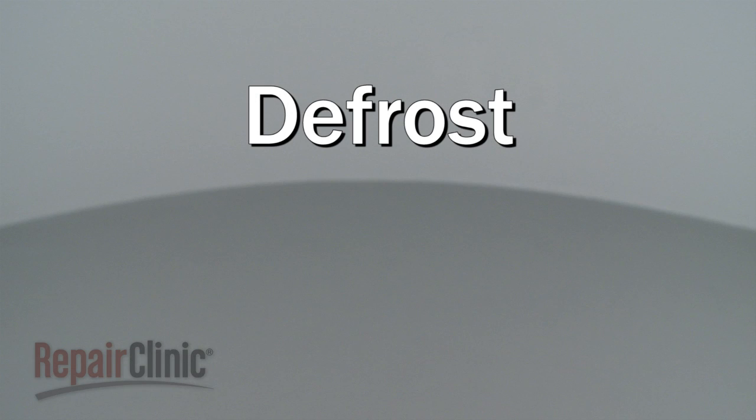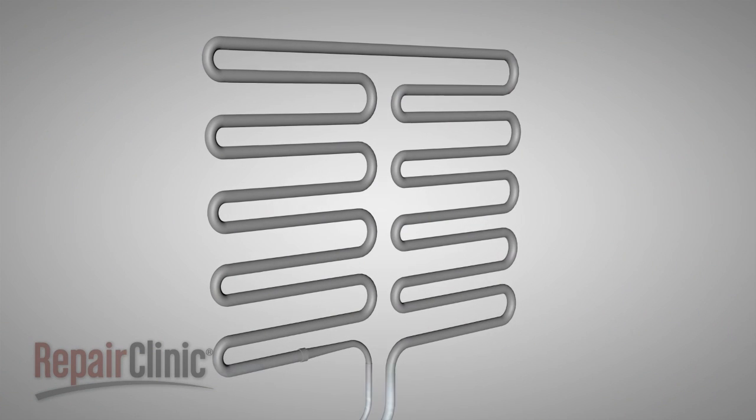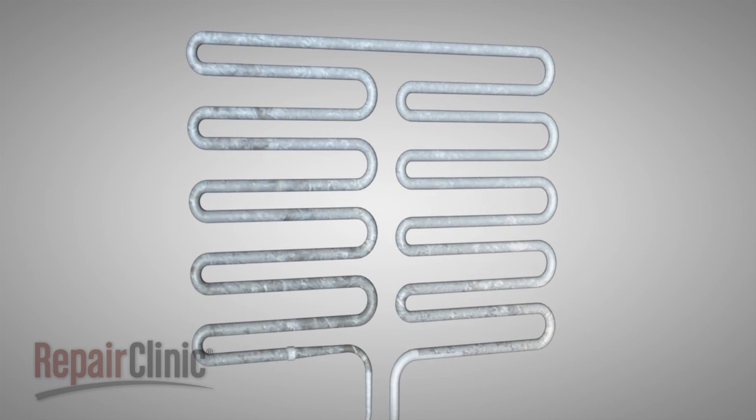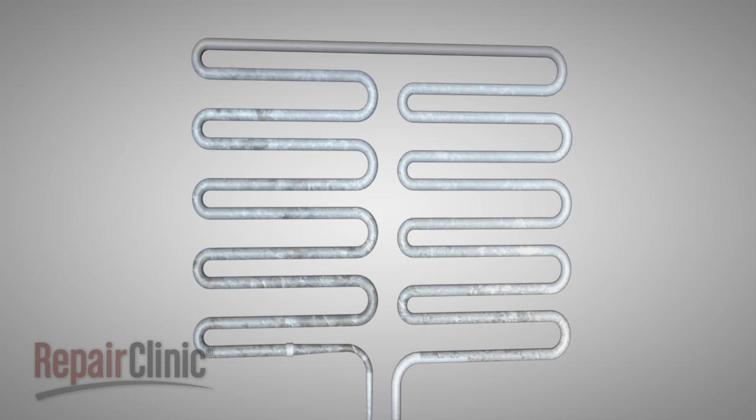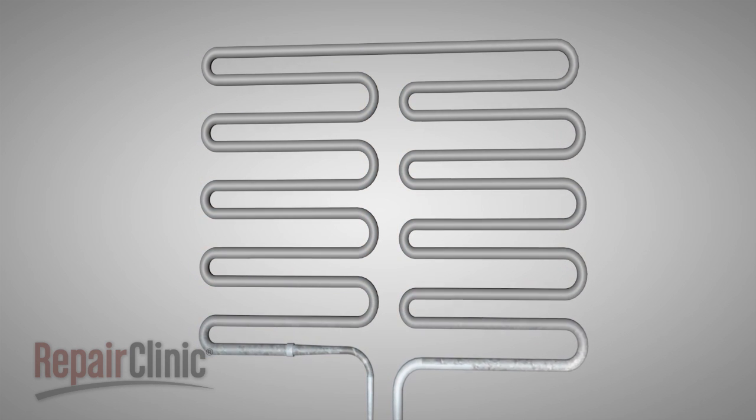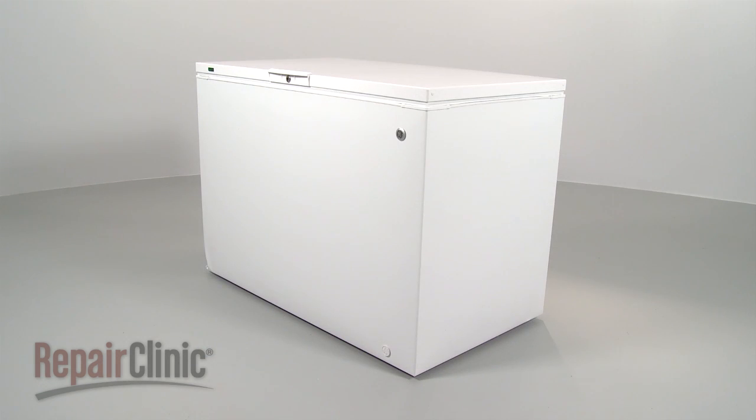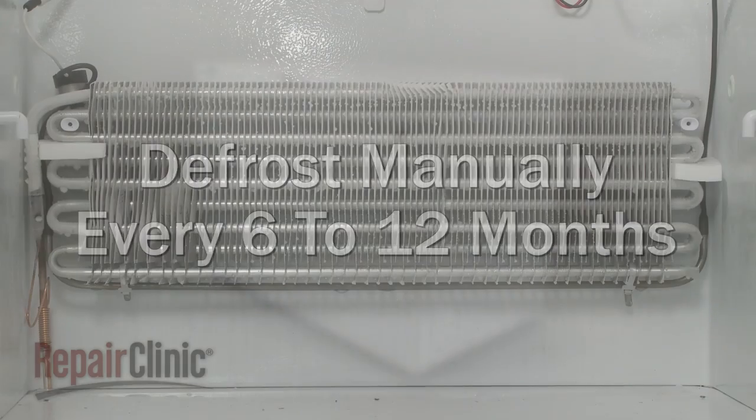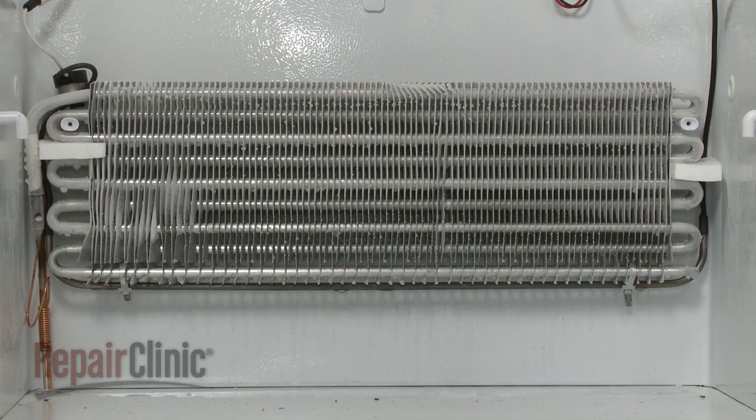As we mentioned earlier, the evaporator coils collect frost as the air passes through them. Since frost buildup can cause airflow problems, most evaporator coils require periodic defrosting. Chest freezers need to be defrosted manually every 6 to 12 months depending on the location. Many upright freezers will defrost automatically.